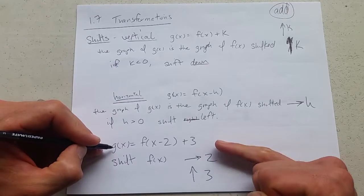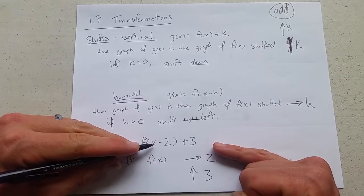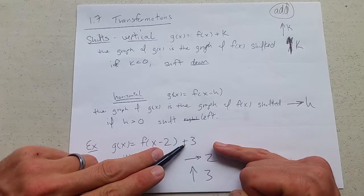So if we have a function g of x is f of x minus two plus three, we have a horizontal shift and a vertical shift.